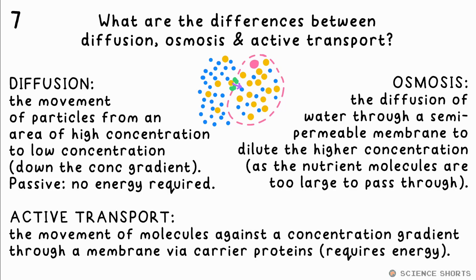Active transport is the movement of molecules from a low concentration to a high concentration — against the concentration gradient. This happens across a membrane via carrier proteins. This requires energy, hence the active part. This is how minerals get into root hair cells, which already have a higher concentration compared to the soil that they're in.